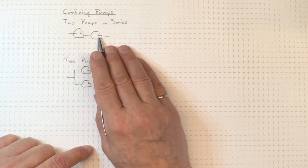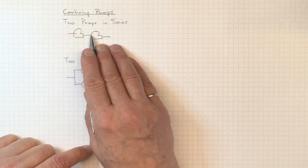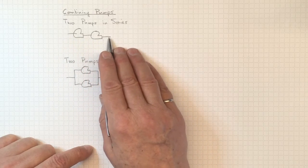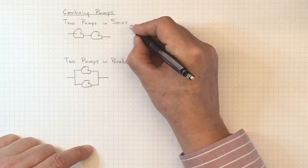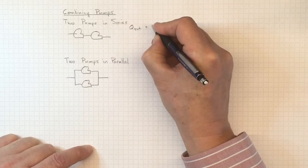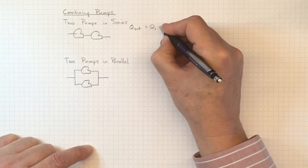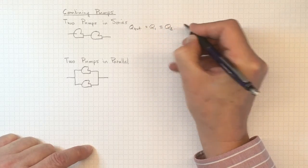So if I put two pumps in series like this, all the flow that comes in through this one is also going through this one and coming out over here. So the total flow of the combined pumping system is just equal to the flow through pump number one, and the same flow is going through pump number two.